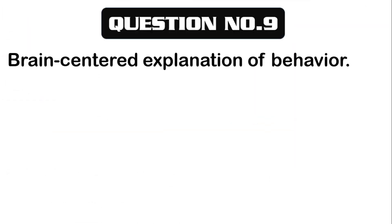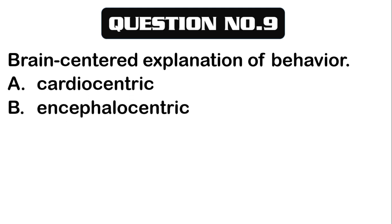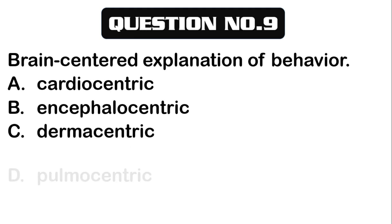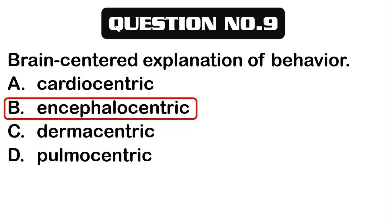Number 9. Brain-centered explanation of behavior. A. Cardiocentric. B. Encephalocentric. C. Dermocentric. D. Pulmo-centric. The correct answer is letter B, Encephalocentric — the brain-centered explanation of behavior.